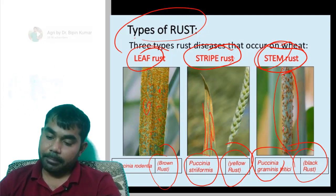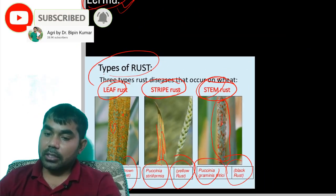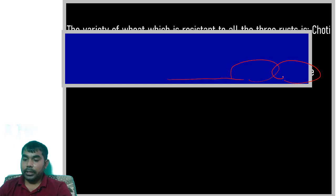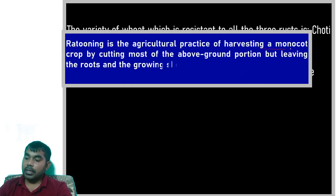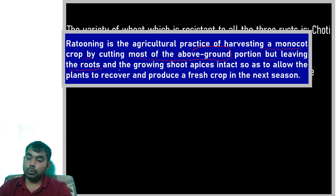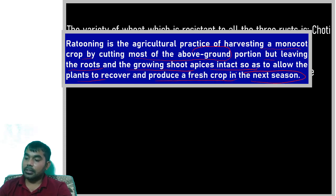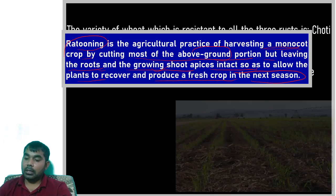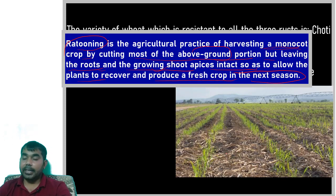Ratooning in sugarcane is advisable only one time. Ratooning is the agricultural practice of harvesting a monocot crop by cutting most of the above-ground portion but leaving the root and growing shoot apices intact, so as to allow the plant to recover and produce a fresh crop in the next season. The best example of ratooning is sugarcane, and it is scientifically advisable only one single time.